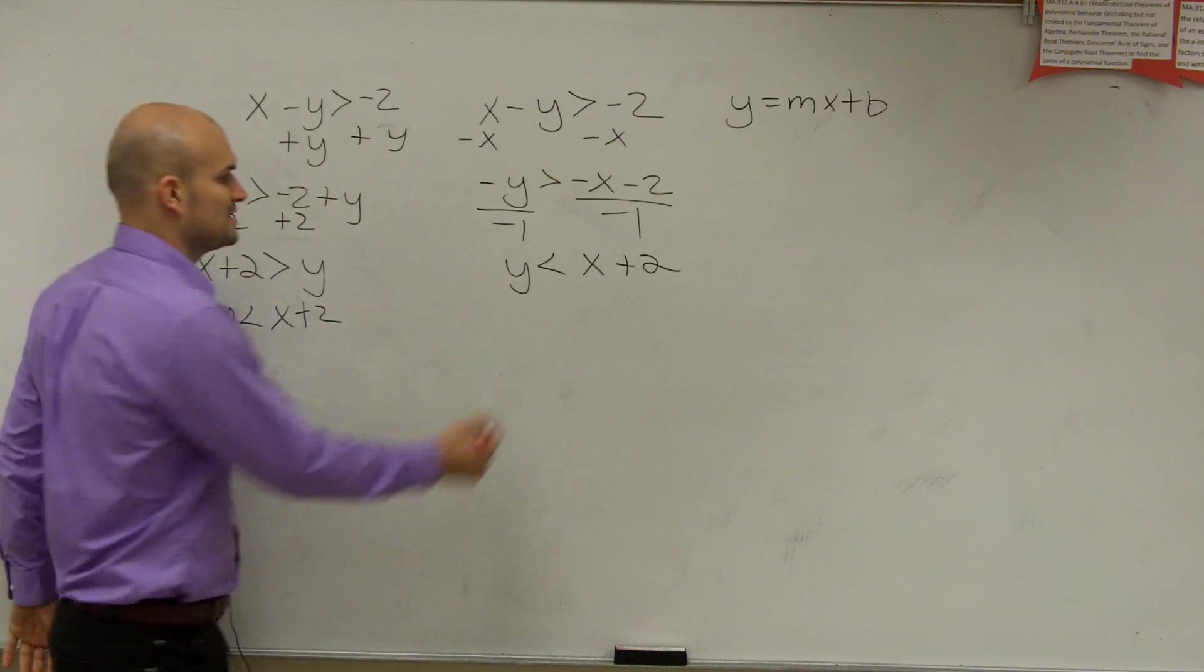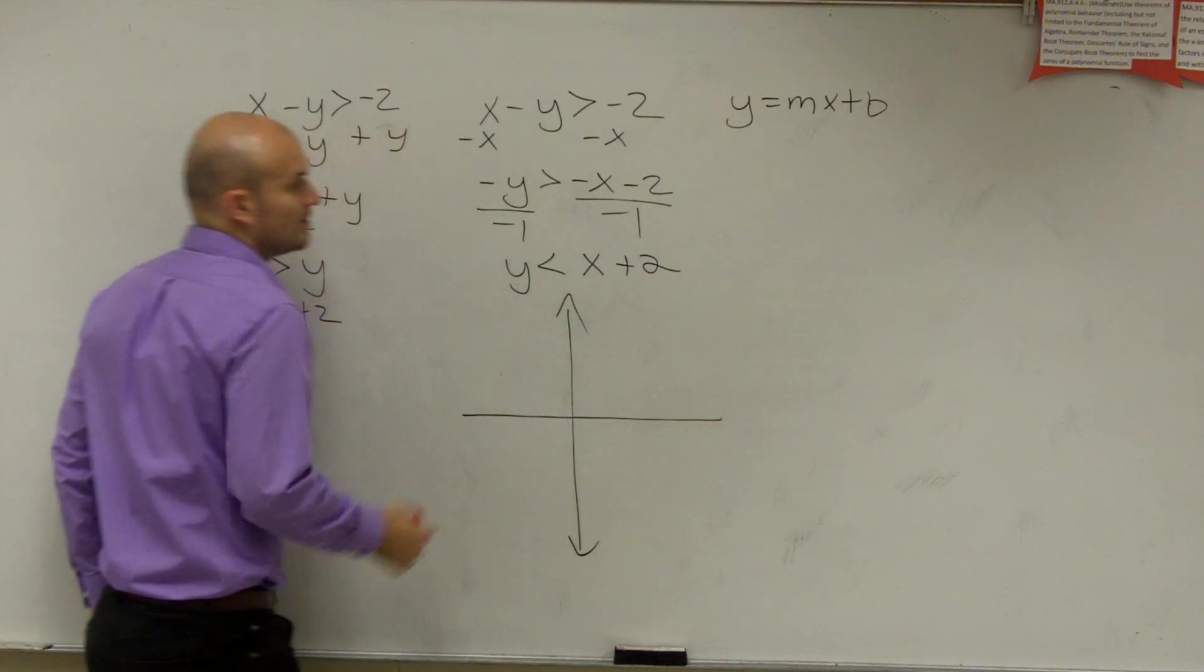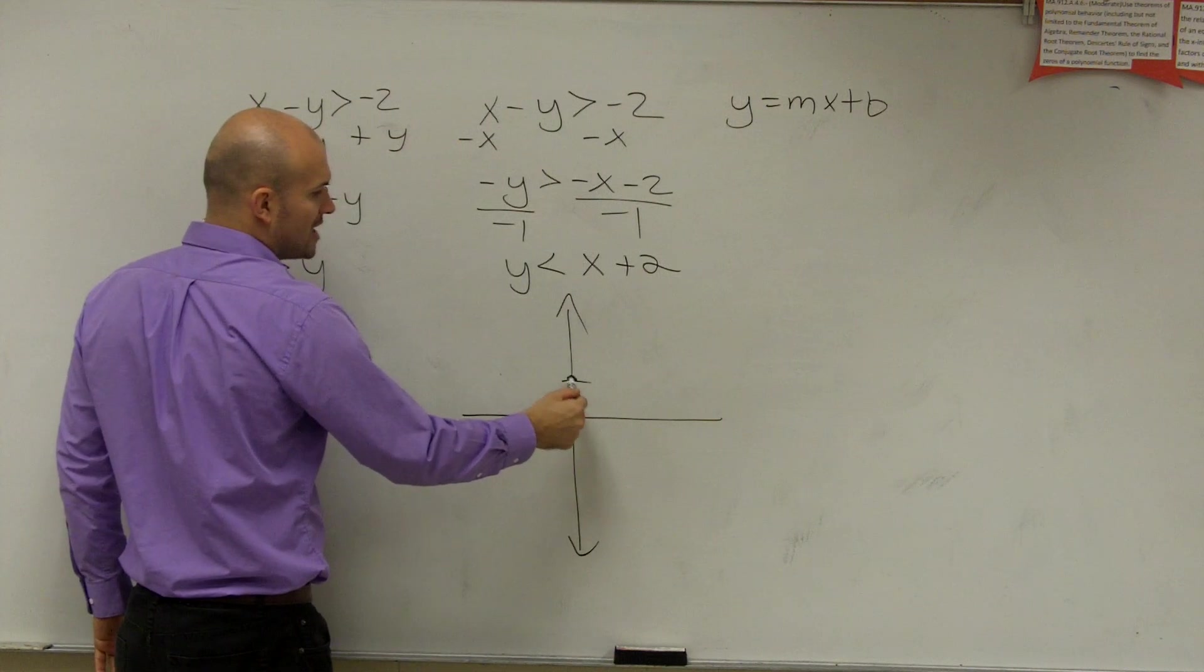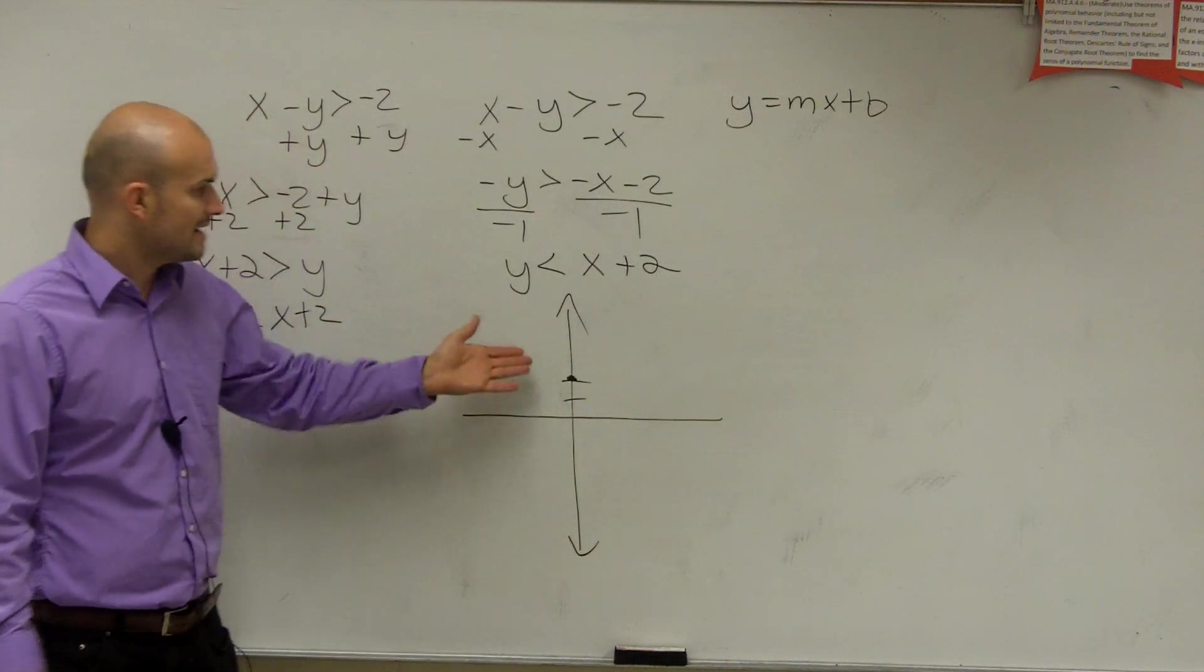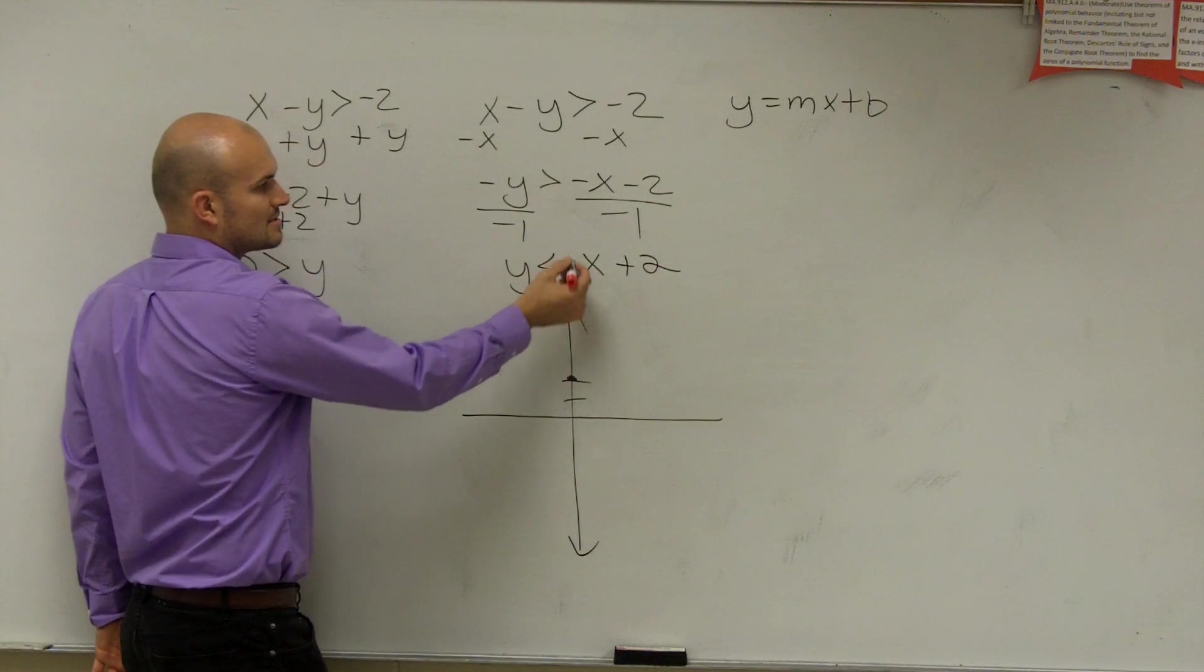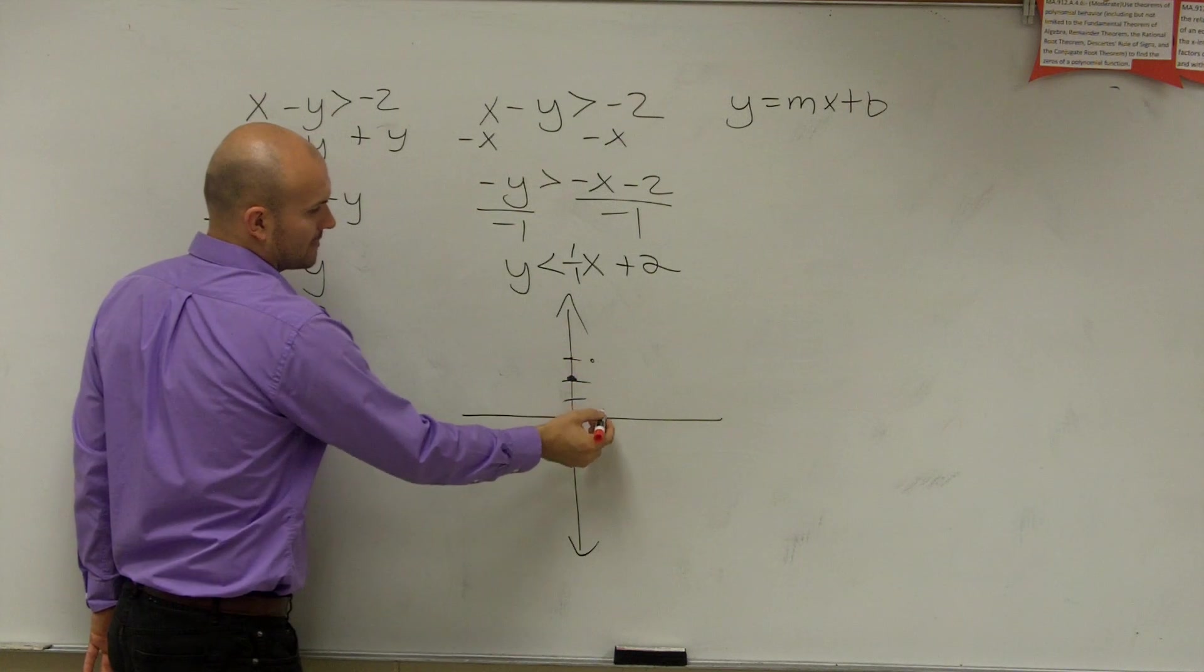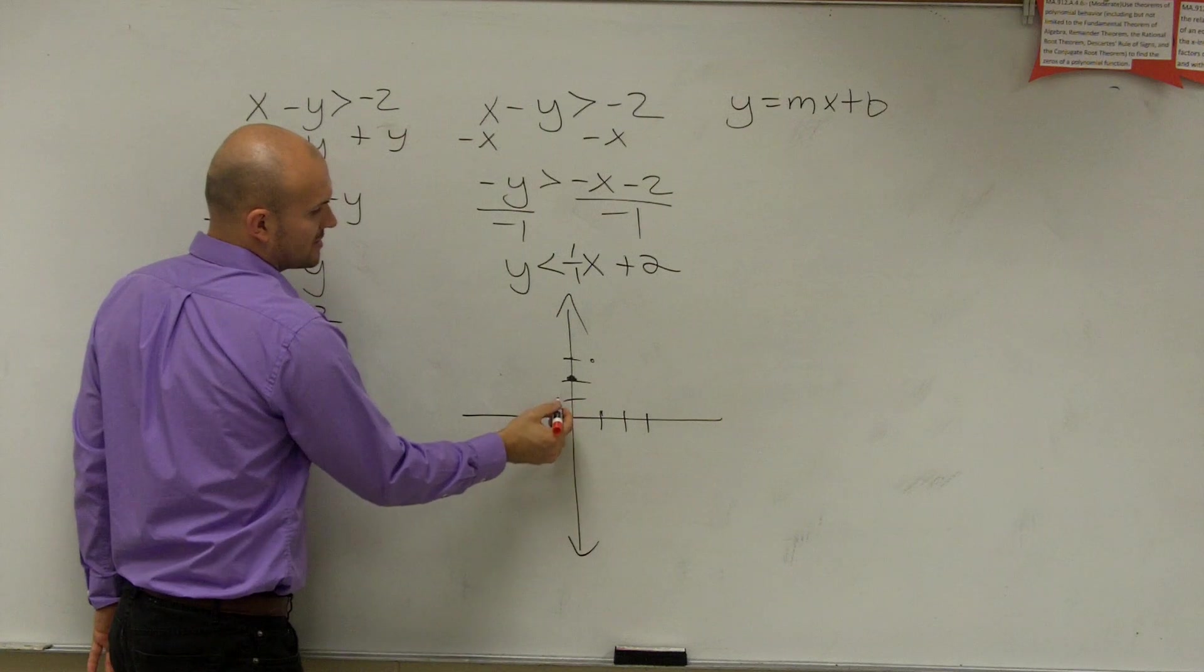So now we have to graph this. You're going to graph it like any other equation. So we look at it. My y-intercept is at 2. That means my graph is going to cross at 2. So you go up there and you plot it at 2. Then the next thing is you look at your slope. What is your coefficient of your x? Yeah, it's 1 or 1 over 1. So you go up 1 over 1. Or you could also say down 1 to left 1.